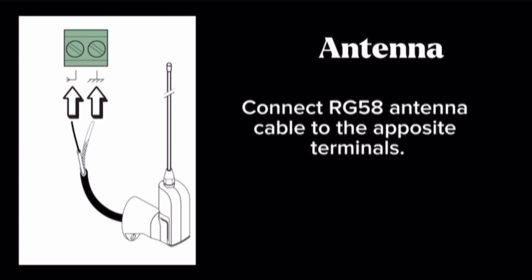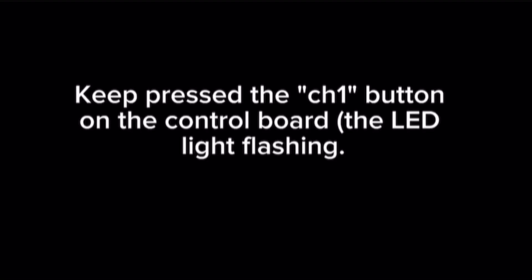Connect RG58 antenna cable to the opposite terminals. Keep pressed the channel 1 button on the control board, the LED light flashing.